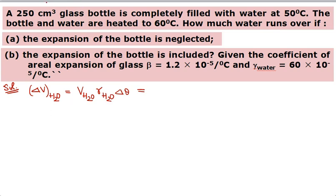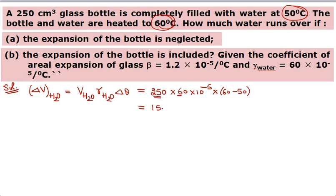The bottle was completely filled, so initial volume of water is 250 cm³. Gamma of water is given as 60×10⁻⁵. Rise in temperature is 60 − 50 = 10°C. So: delta V = 250 × 60×10⁻⁵ × 10 = 150000×10⁻⁵ = 1.5 cm³. That was the first part, considering only water expansion and neglecting bottle expansion.